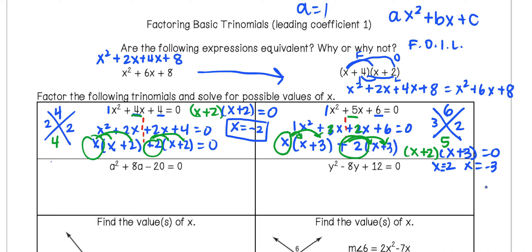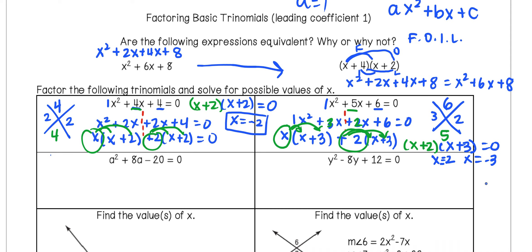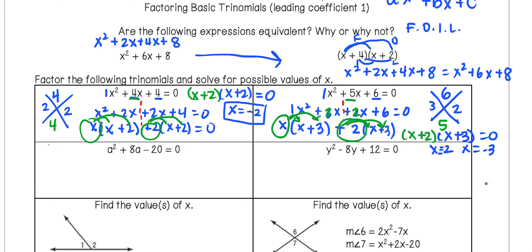So you might be wondering if there's a faster way. When the leading coefficient is 1, we start to see patterns. When we draw the x-box and find values — like 3 and 2 in the previous example — those numbers showed up directly as positive 2 and positive 3 in our binomials. In the first example, both values were 2, giving us (x+2)(x+2). So once you find the two numbers, you can use them as a shortcut when the leading coefficient is 1.